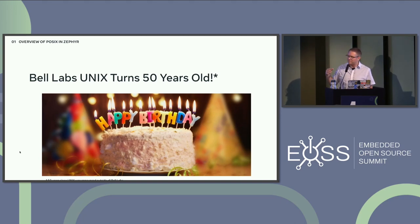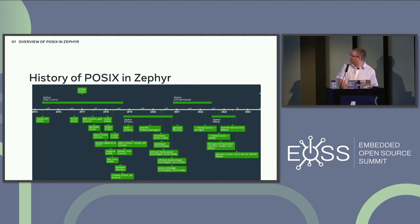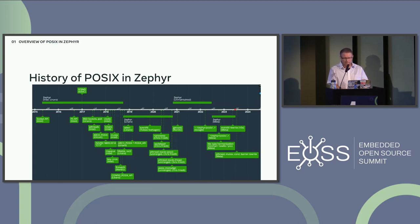Now a quick overview of the history of POSIX in Zephyr. The first commit for Zephyr in its current incarnation was 2015. The sockets API was introduced by Jukka Rissanen, who's still involved in the project. The socket ABI is BSD socket. Intel introduced the file system API in 2016, K-poll similar to poll in 2017.